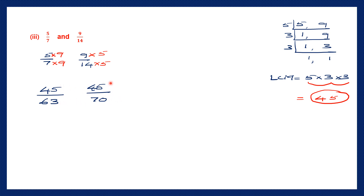The numerators are the same, so the smaller denominator is the greater fraction. 45 by 63 is greater. Going back to the question: 5 by 7 and 9 by 14 — 5 by 7 is greater.